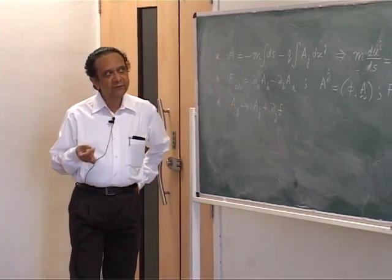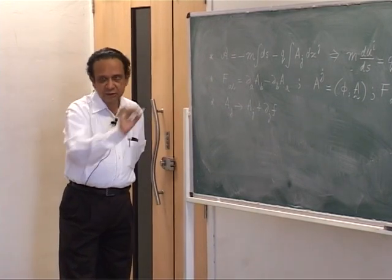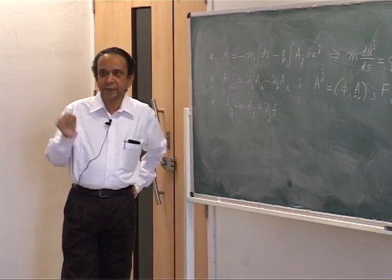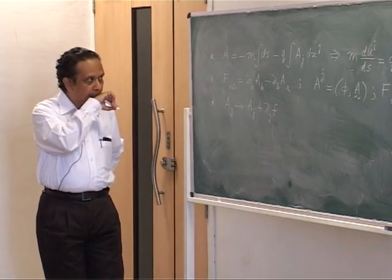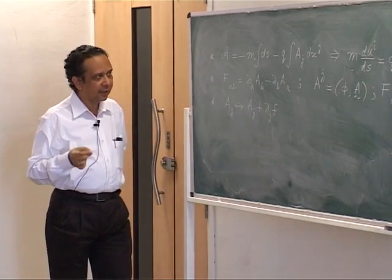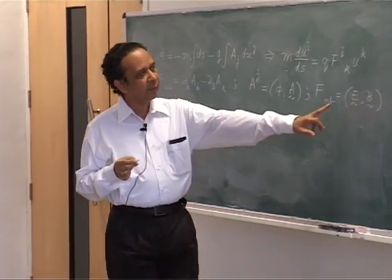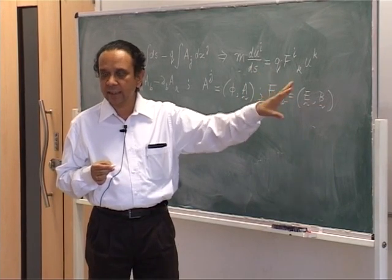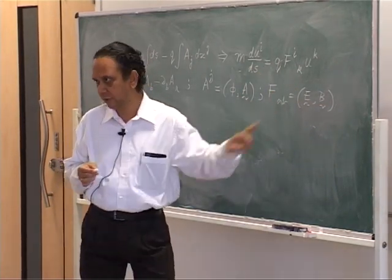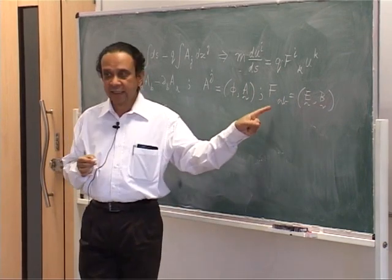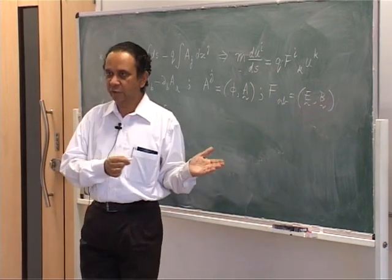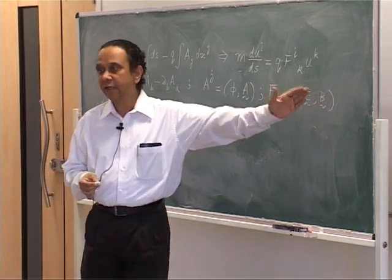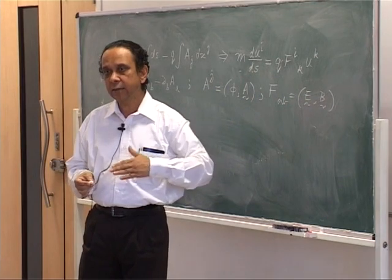Now I want to proceed from here to various consequences of this and then describe the dynamics of the electromagnetic field itself — this is what we are going to do today. The first consequence is that the electric and magnetic fields are not the three components of a four-vector, but they come out as components of a second-rank anti-symmetric tensor. We know how a second-rank anti-symmetric tensor transforms under a Lorentz transformation; therefore we can calculate how E and B transform.